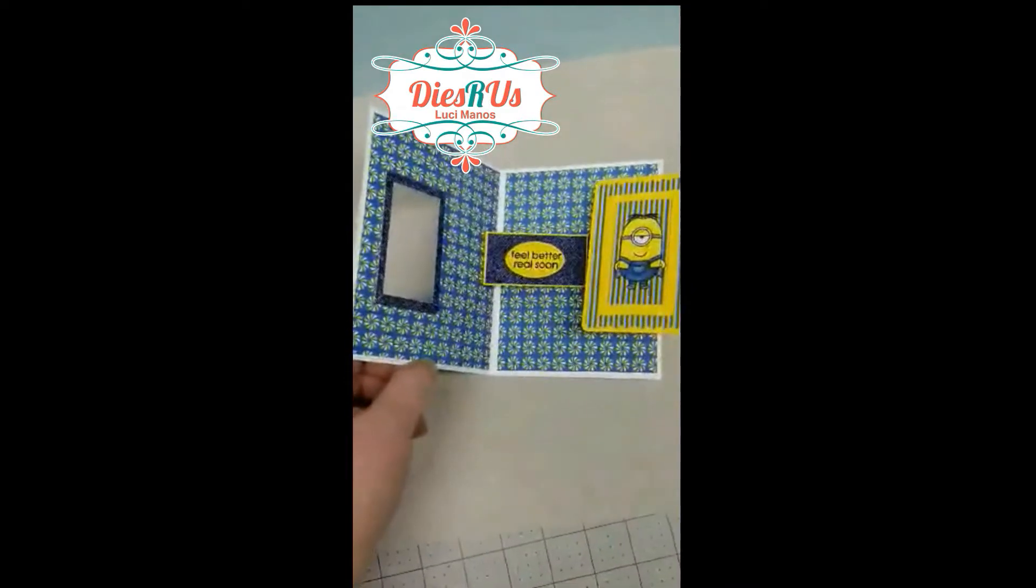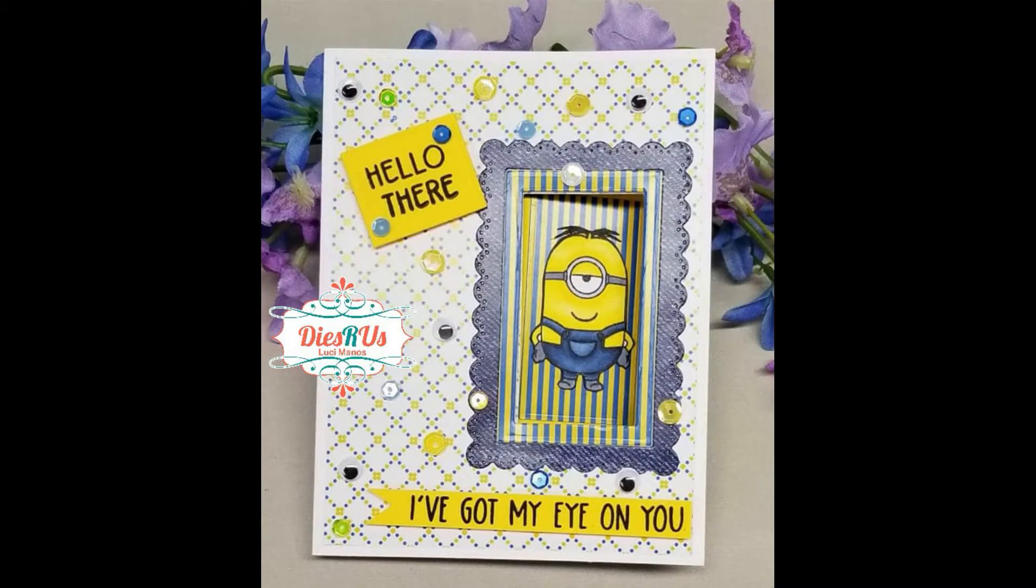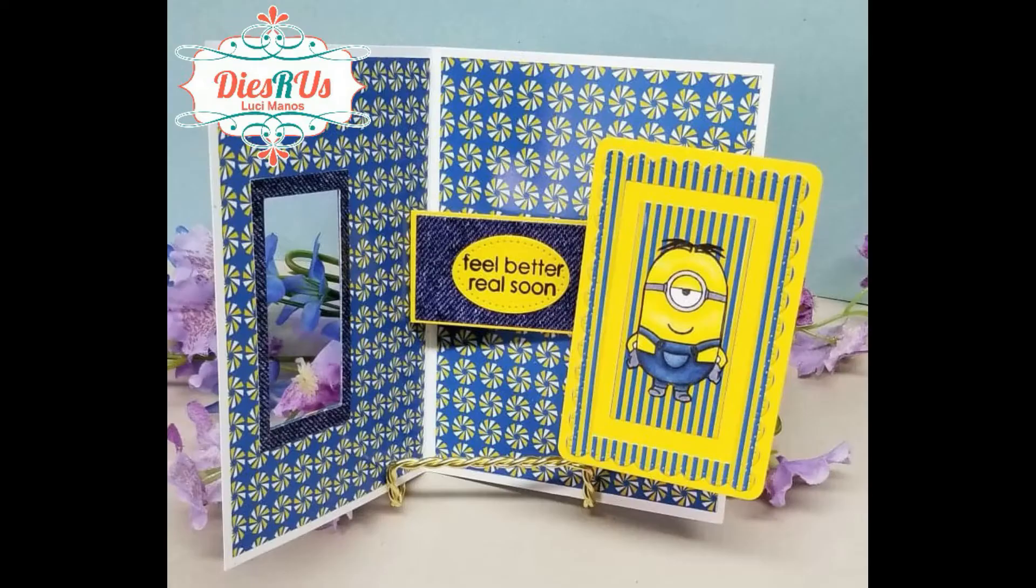And the die set that I used to create this is from Karen Burniston. I'm also using a stamp set and papers from Kindred Stamps. The stamp set is called Bananas and I do not believe that this is available but that's the stamp set that I used.